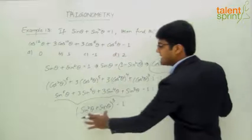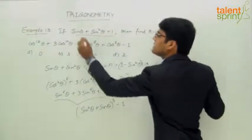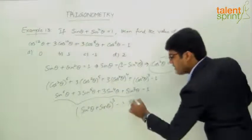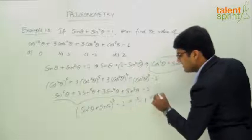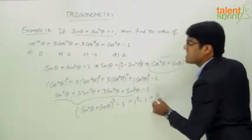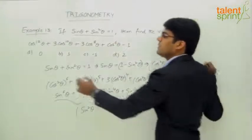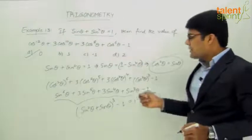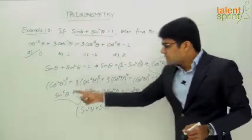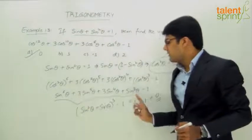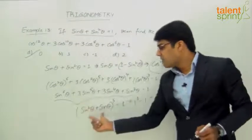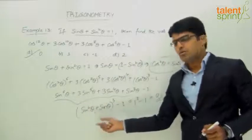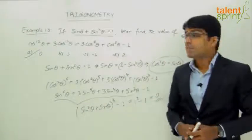We know that sin²θ + sin θ = 1 from the given question. So this becomes 1³ - 1 = 0. The answer for this question would be option A: 0. So it's all about observation here — if you can understand that this is in the form of (sin²θ + sin θ)³, you will get the answer directly.